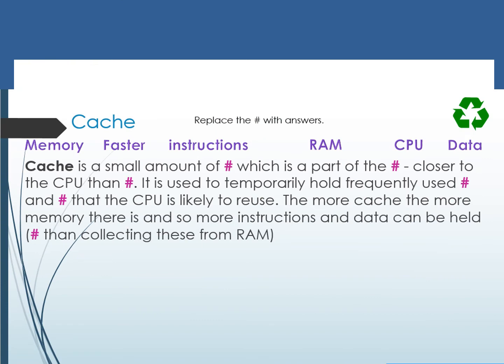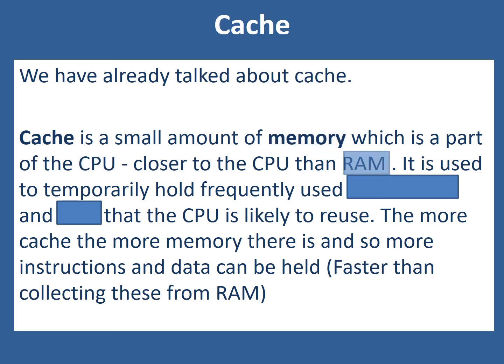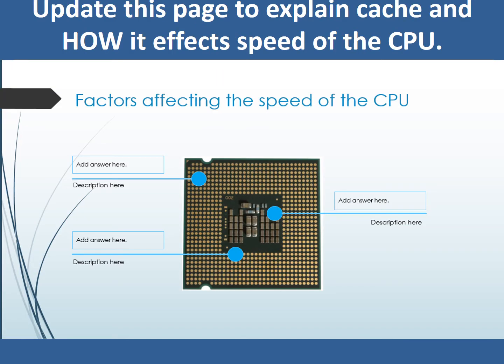Please complete the page looking at what cache is and filling in the keywords. We've already talked about cache in previous lessons. Cache is a small amount of memory which is part of the CPU. It's closer than RAM, making it much faster, and it's used to temporarily hold frequently used instructions and data that are likely to be reused. The more cache, the more memory there is within the CPU, so more instructions and data can be held, meaning it's going to be faster than collecting these from RAM. Please now go back and update the section about cache.